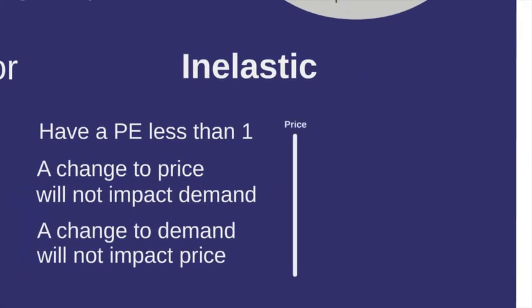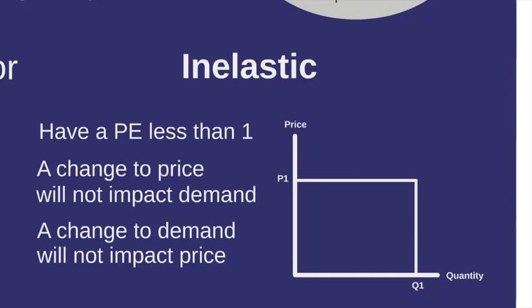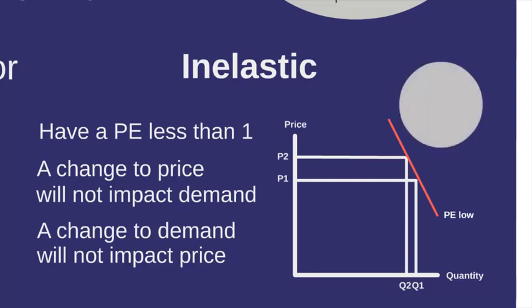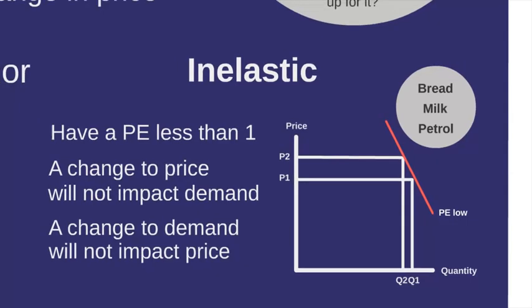Inelastic is the opposite. Bringing up the graph, this is where the price and quantity are pretty much set, and a big change in price will have very little impact on the quantity — giving a very low PE rating. This applies to essential items like bread, milk, and petrol — things that regardless of how much the price goes up or down, people are going to purchase anyway because they have to have bread, they have to have milk, they have to have petrol for their car, and they'll pay the price regardless of what it is.